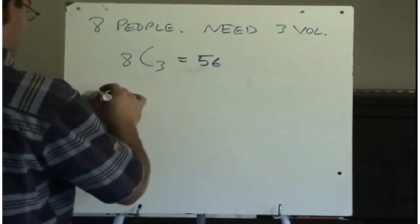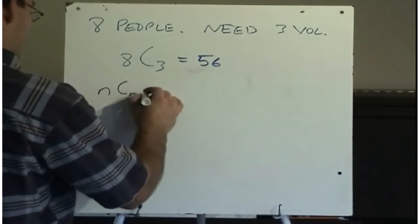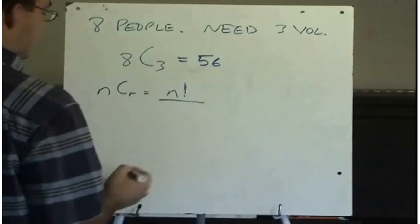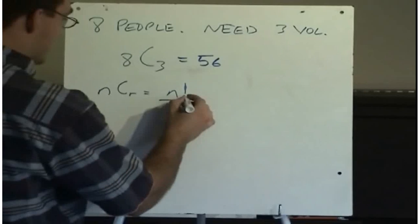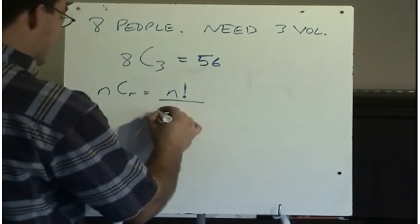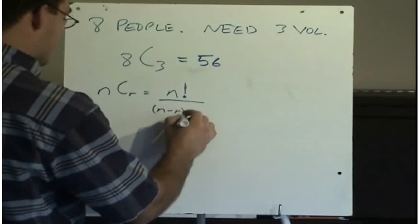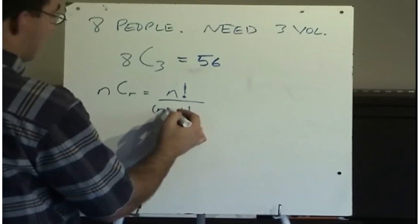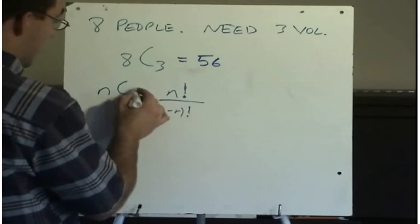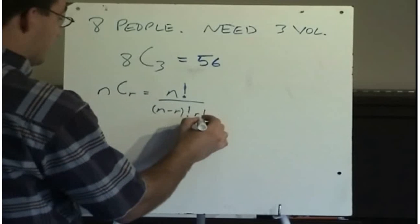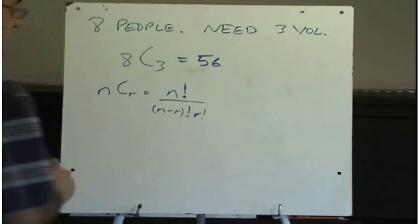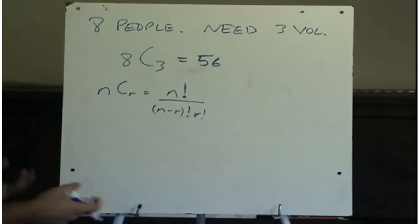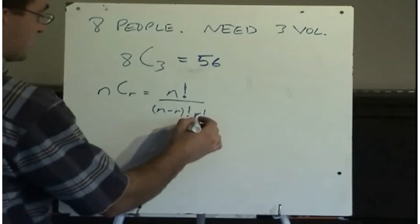Now, we have a formula for this as well. We have NCR, which is N factorial, divided by N minus R factorial. So just like the permutation, you recognize this as being the formula for permutation. But because, now order doesn't matter, we need to also divide by R factorial. What that does is it gets rid of all of the doubles, the ones where we have the exact same numbers, just mixed up in different order.